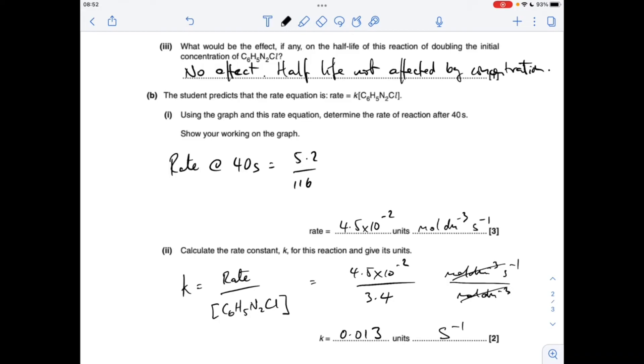Now there is another way you can calculate the rate constant for a first order reaction. This only works for a first order reaction. But because they said using the graph and the rate equation, we couldn't use this method. But if they hadn't have said that, I'll just quickly explain this alternative method.